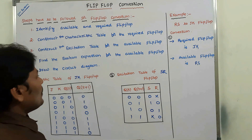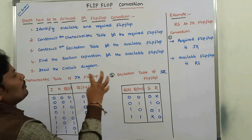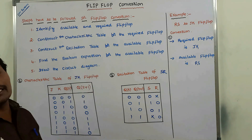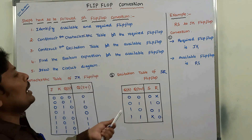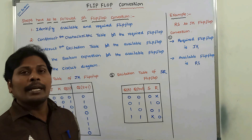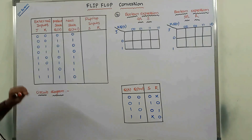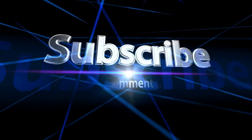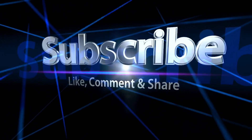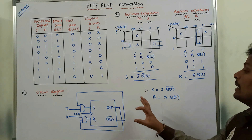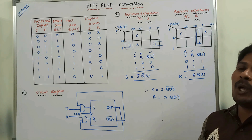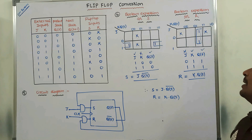So steps one, two, and three are completed. After that, go for the fourth step: find out the Boolean expression for the available flip-flop. Here the available flip-flop is RS flip-flop, so we have to find out the Boolean expression for S and R. Whatever the resultant circuit diagram we get, this is the RS flip-flop to JK flip-flop conversion.